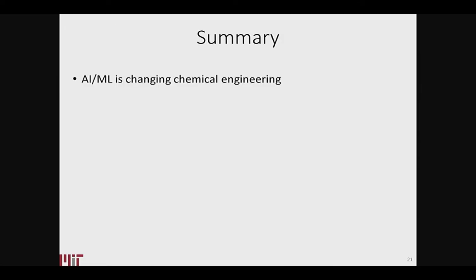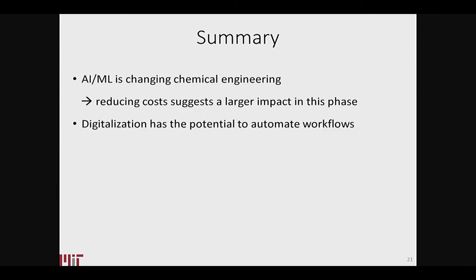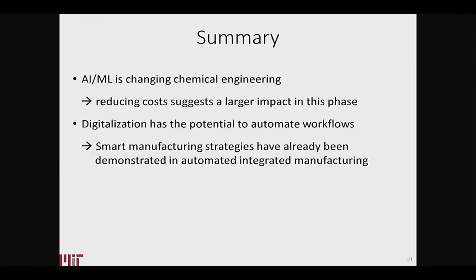To summarize: AI and machine learning is changing chemical engineering. The reducing cost suggests a larger impact that will keep going and won't be just a temporary blip. Digitalization has the potential to automate workflows — our group has over six applications where we've done things digitally and then built them and had them work either the first or second time, including gene therapy and vaccines.